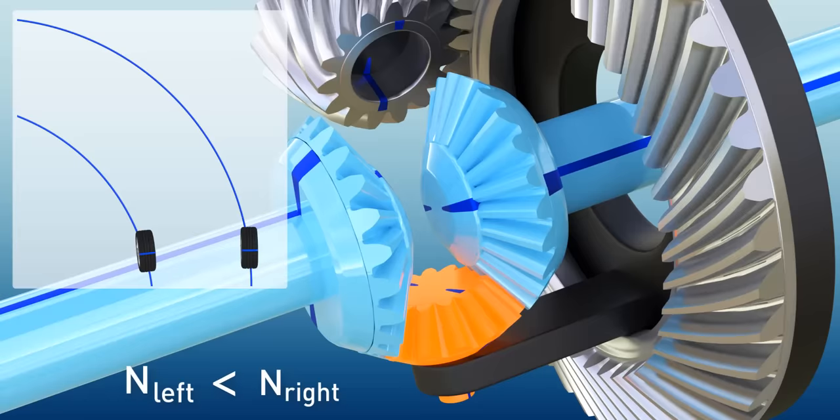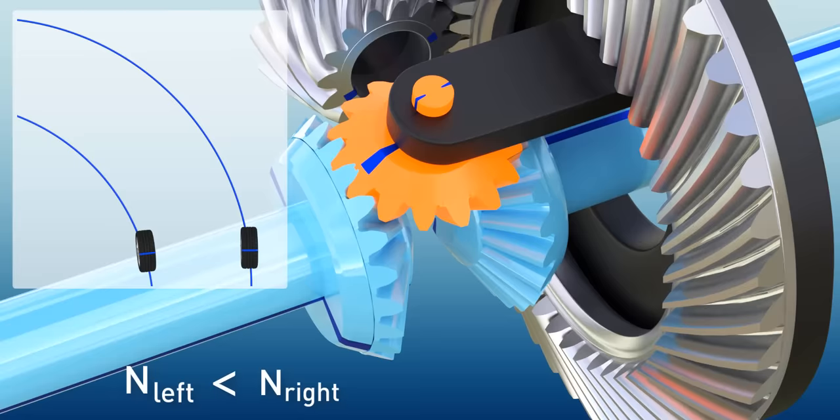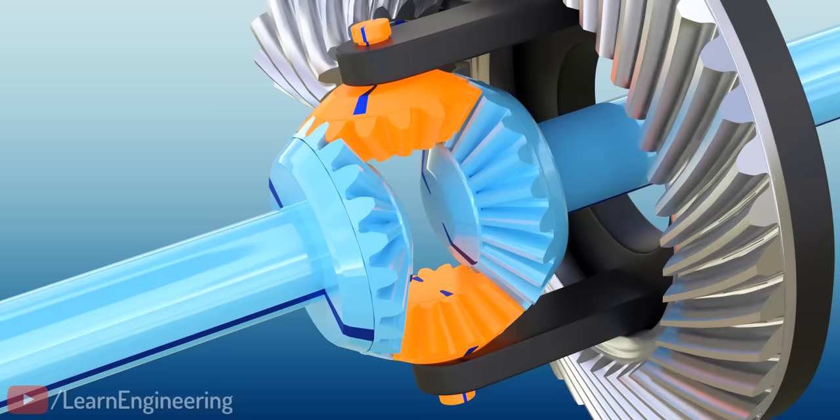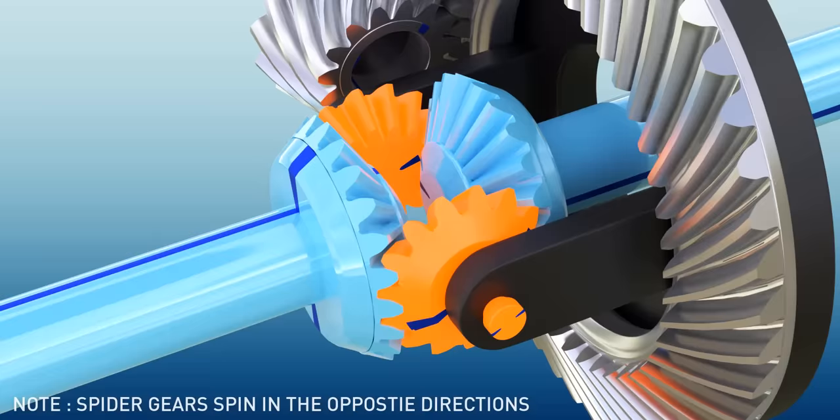While taking a left turn, the spider gear will spin in the opposite direction. In order to carry load, one more spider gear is usually added. Four spider gear arrangements are used for heavy load vehicles.